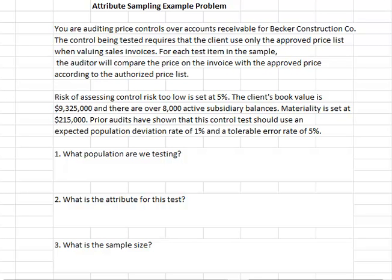In this sample problem, you are auditing price controls over accounts receivable for Becker construction. The control you're going to test requires that the client use only the approved price list when valuing sales invoices. For each test item in the sample, the audit program requires you to compare the price on the invoice with the approved price list. This part of the problem gives you the information that the audit program would specify in order to set up the test.